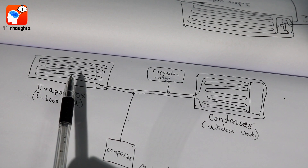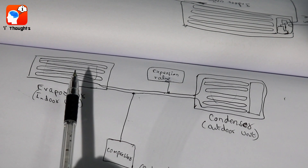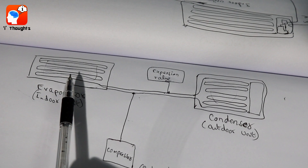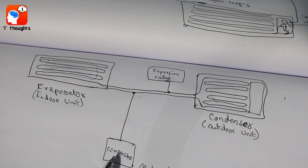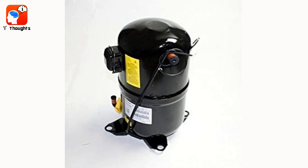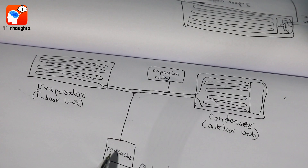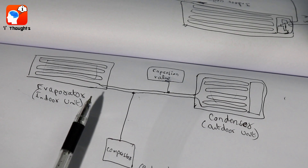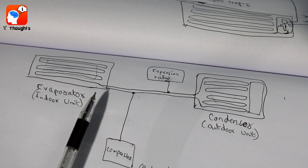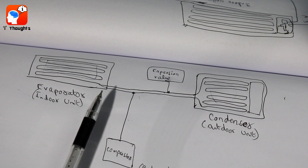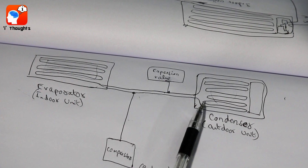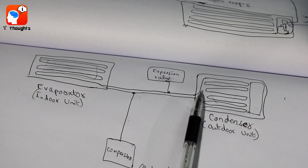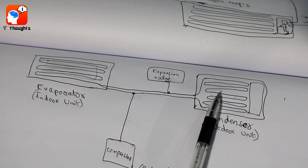How do you call this the outdoor unit? There is a fan. The fan absorbs the hot air, and the condenser is absorbed by the condenser. The compressor is connected to the compressor — this is the compressor. The compressor increases the coolant pressure.